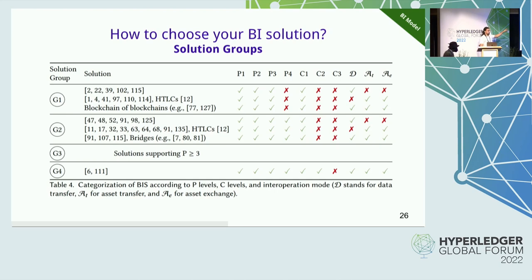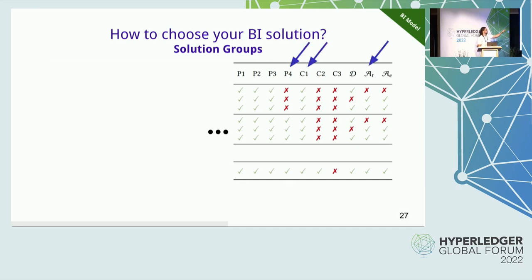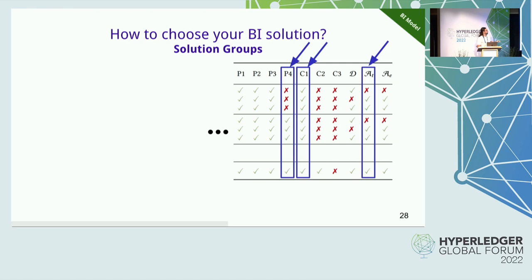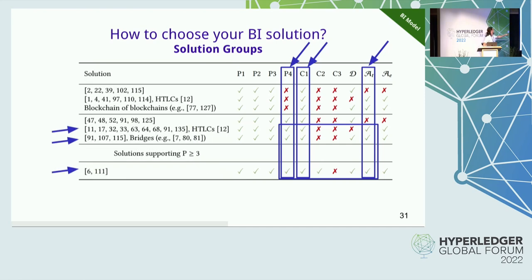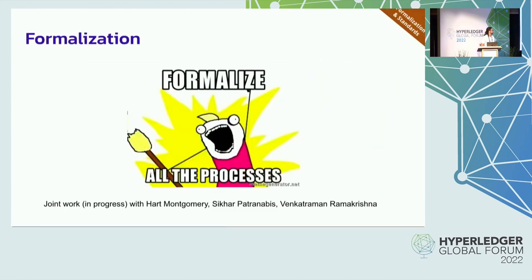Our systematization deliverable looks at P-levels, C-levels — D for data transfer, AT for asset transfer, and AE for asset exchange. If we want, for example, a P4, C1 asset transfer solution, we look at the corresponding columns and check which solutions have a tick. Those rows indicate interoperability solutions that support the required P-levels and modes. I'd now like to hand over to Dina to present our efforts on formalization.